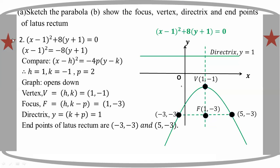The graph is (x minus 1) whole square plus 8 into (y plus 1) equal to 0. Now the graph is x minus 1, whole square plus 8 into (y plus 1) equal to 0, with the whole square plus 4 total of 8.